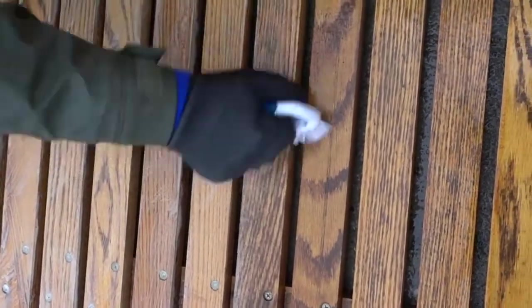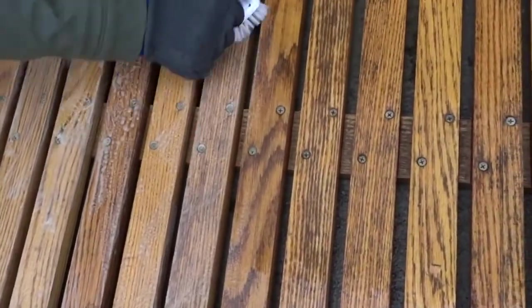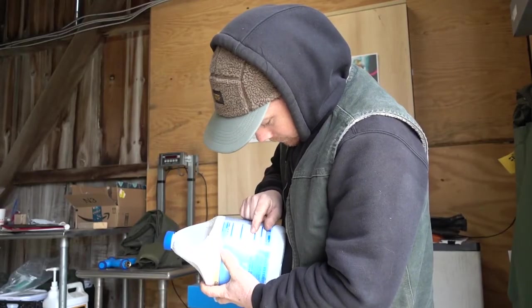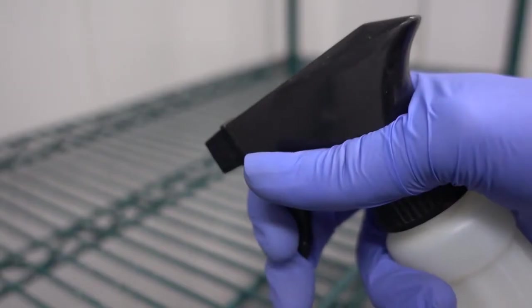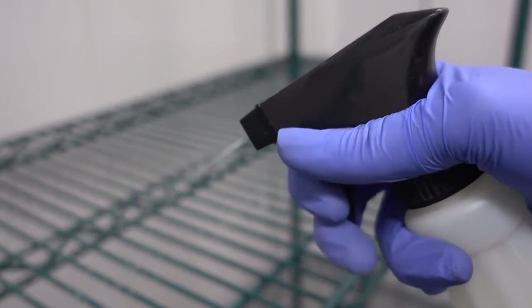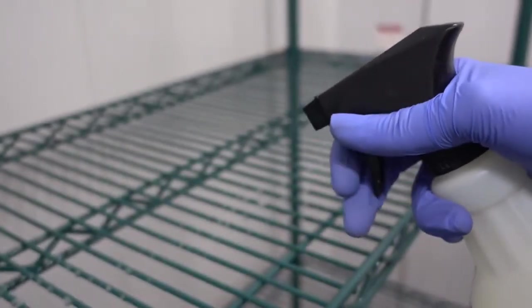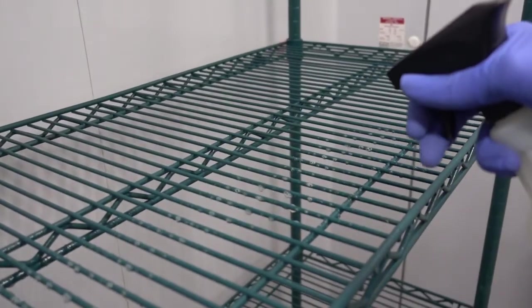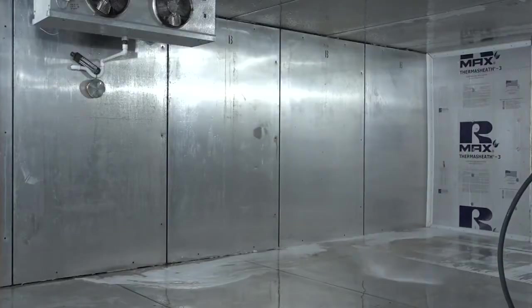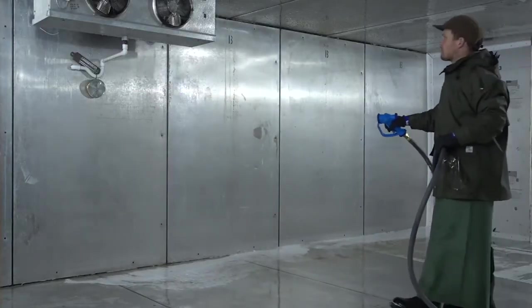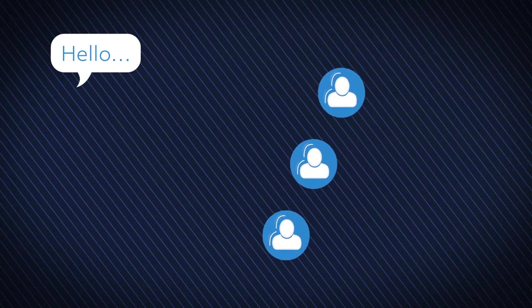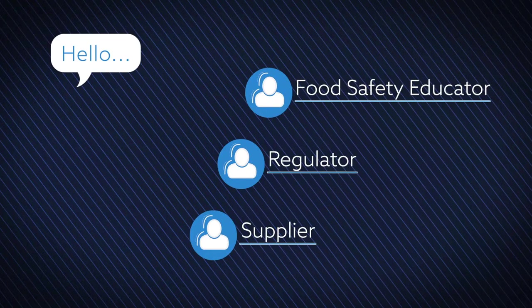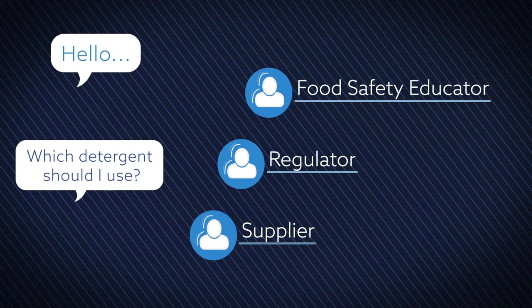The detergent you choose will be based on the nature of the soils and the types of surfaces you are cleaning. Be sure to consult the label to find the appropriate concentration and contact time for your cleaner. For example, this detergent needs a contact time of at least one minute to break up soils before scrubbing. Also be sure to rinse the surface with potable water after scrubbing. Please consult a food safety educator, regulator, or supplier to determine the right detergent for your equipment.